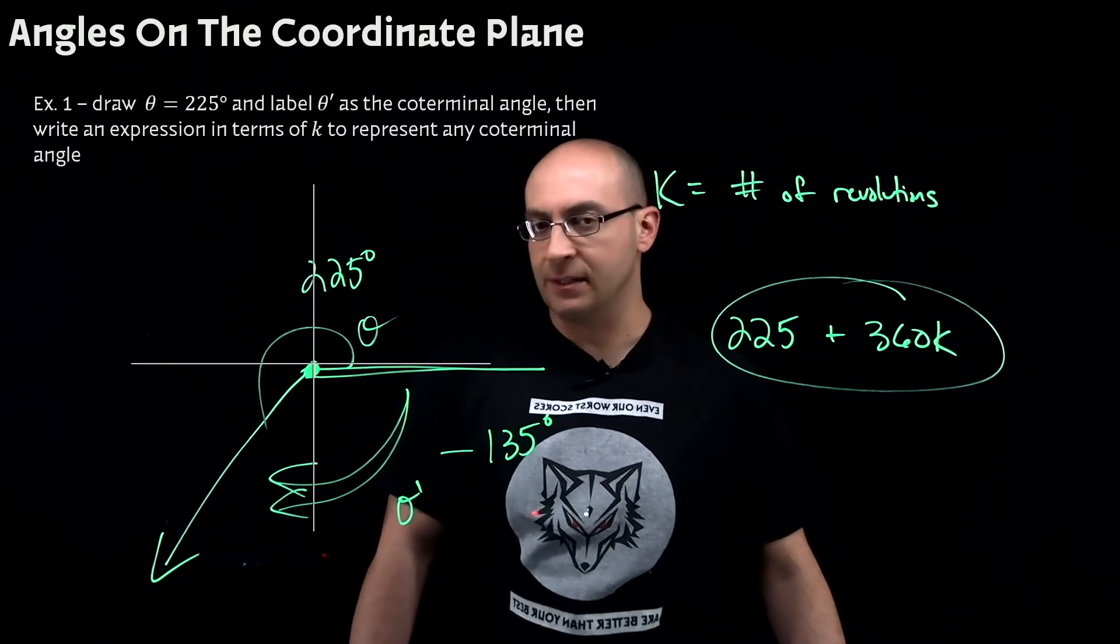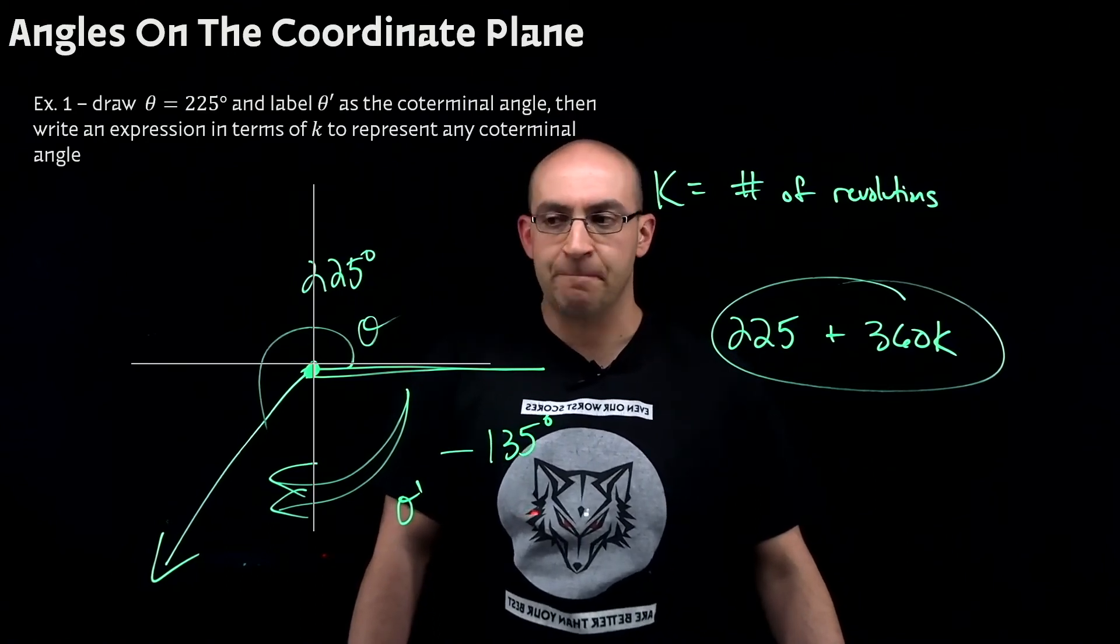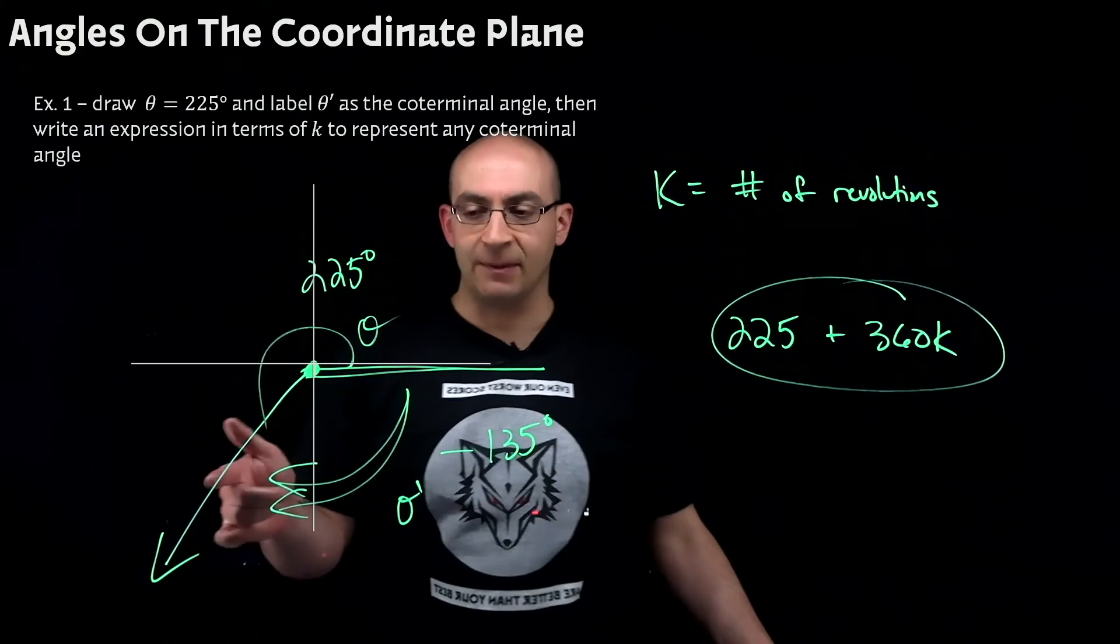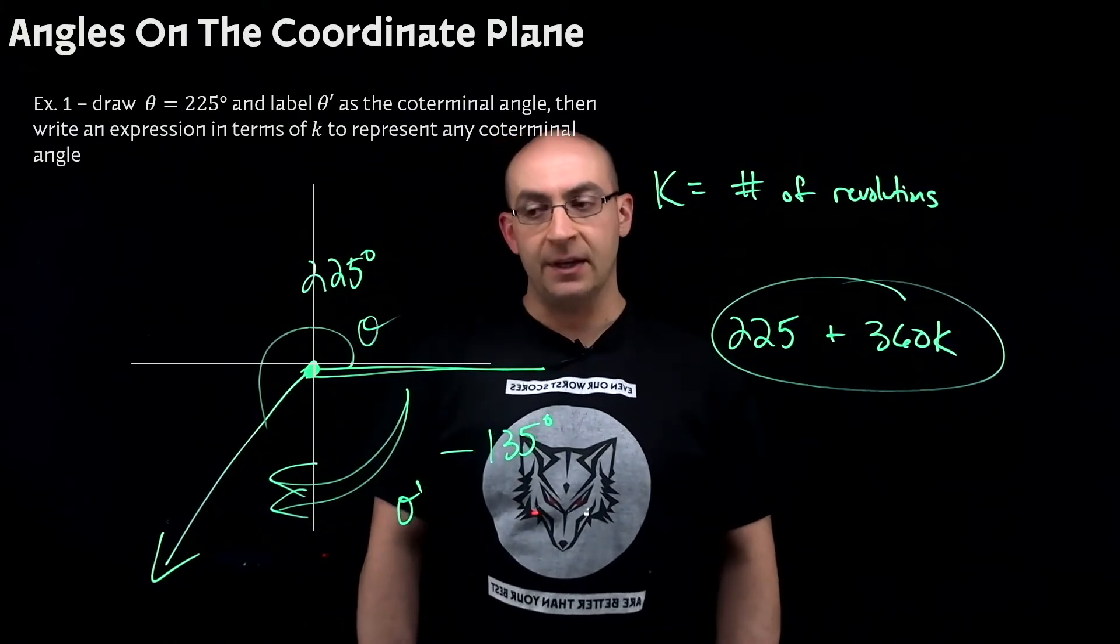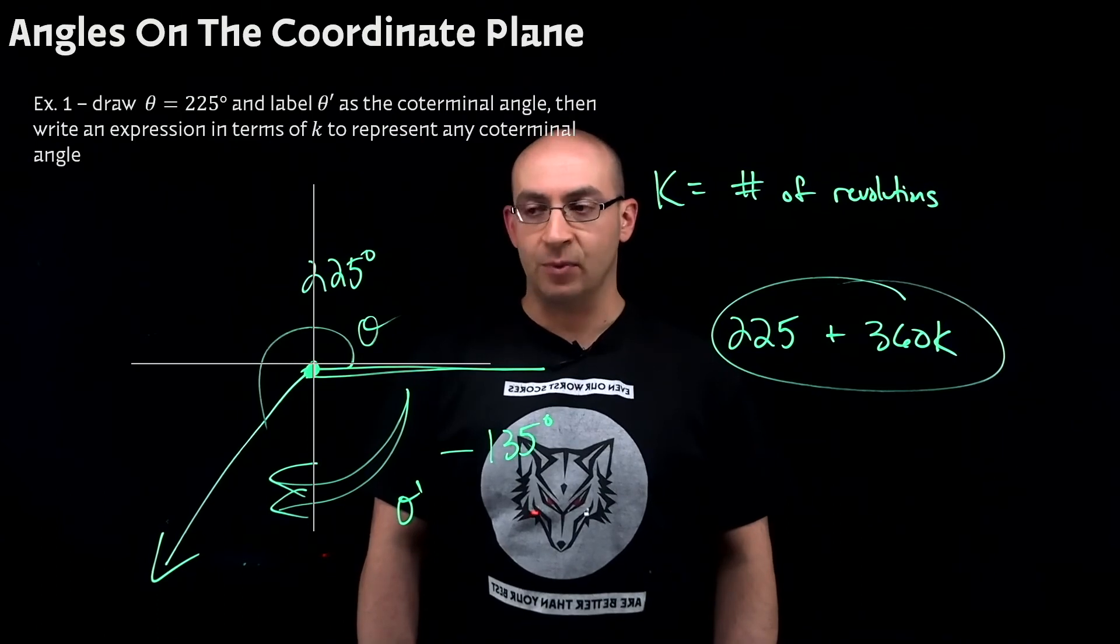Now, really quickly, let's just kind of put this into perspective. If 225 represents our first angle, that means I can add 360 to it to make our second coterminal point.